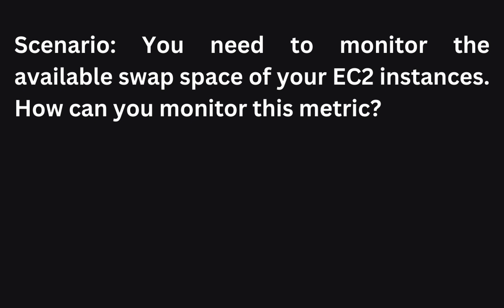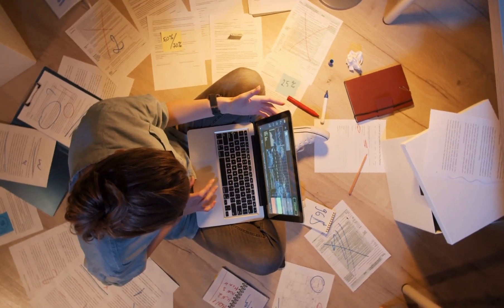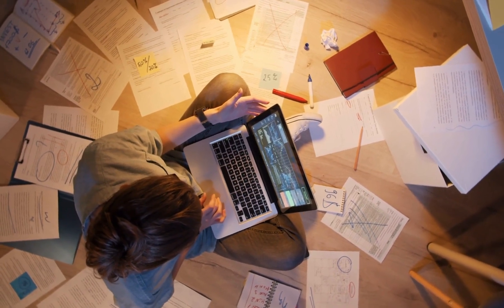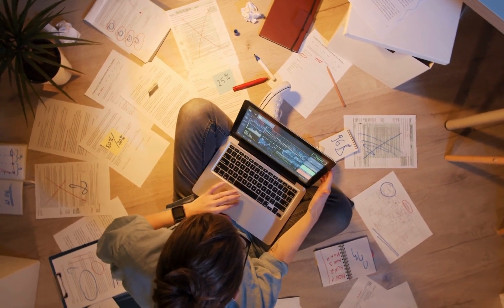In the next scenario, you need to monitor the available swap space for your EC2 instances. To monitor swap space for your EC2 instances, you can install the CloudWatch Agent and configure it to monitor the swap utilization metric. This enables you to track swap space usage and take appropriate actions if necessary.